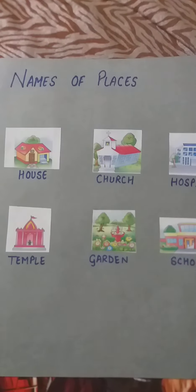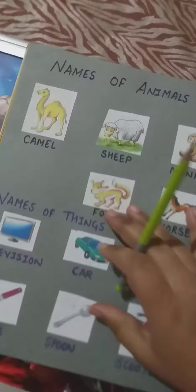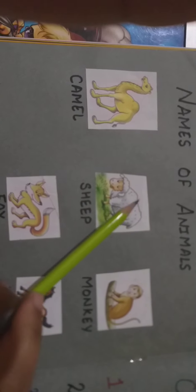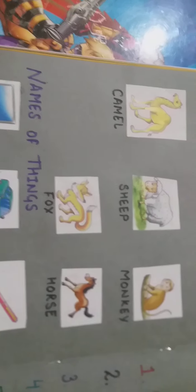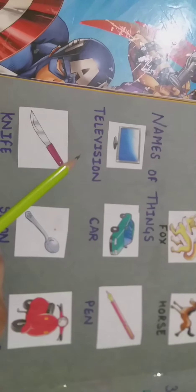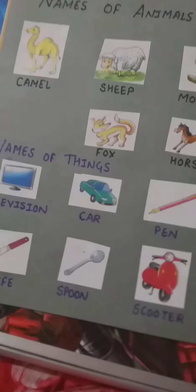School. The next one is names of animals — camel, sheep, monkey, fox, horse. Then the name of things: television, car, pen, knife, spoon, scooter. Here you can see many of the nouns around you.